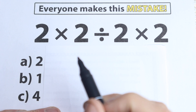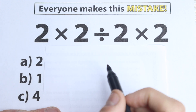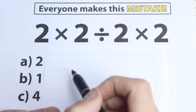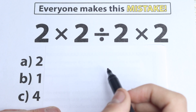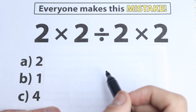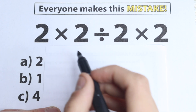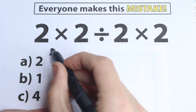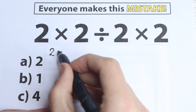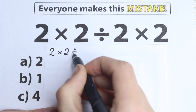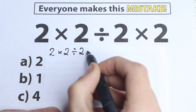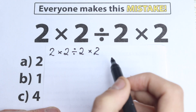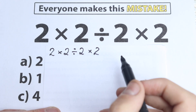Just trust me, this is a very interesting and great challenge. Here's our question, here's our answer — choose one option. What do you think is the correct answer? So I want to start solving this. Right here we have 2 times 2 divided by 2 and times 2. We need to understand what we need to do first.